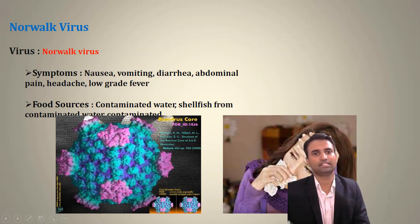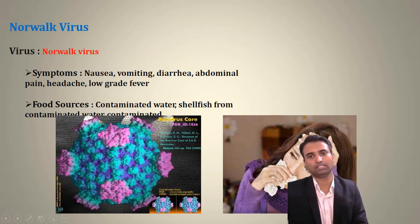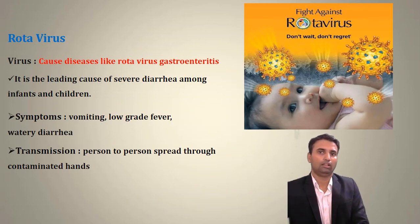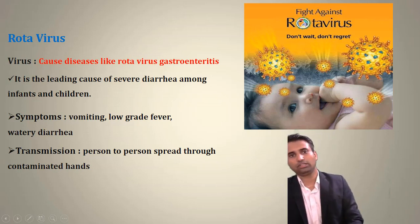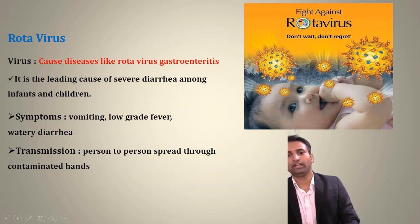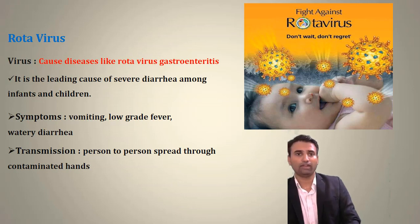Norovirus symptoms include nausea, vomiting, diarrhea, abdominal pain, headache, and low-grade fever. Its food sources include water, shellfish, and contaminated water. Rotavirus causes gastrointestinal problems and particularly affects children and infants. Symptoms include vomiting, low-grade fever, and watery diarrhea. It can be transmitted from person to person, from animal to person, or through contaminated hand surfaces.